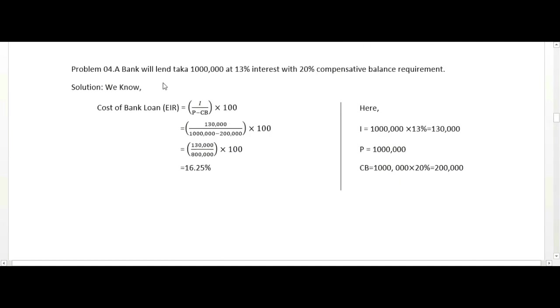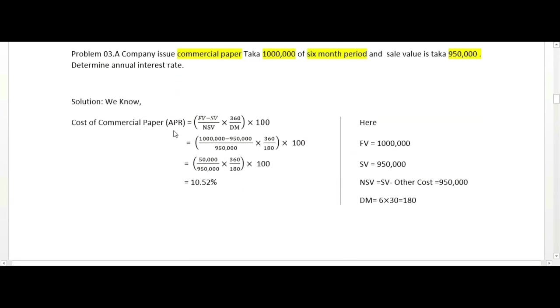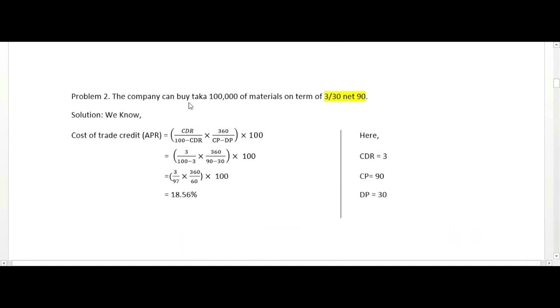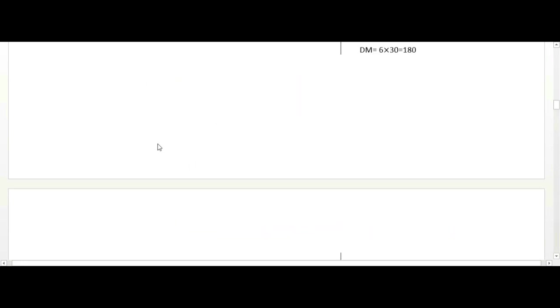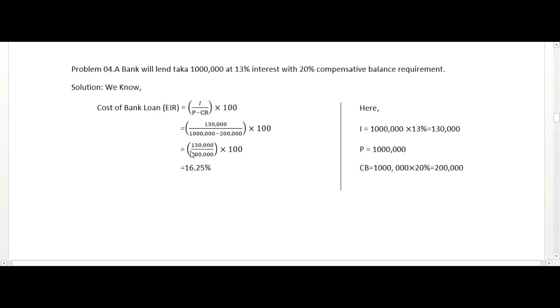Problem: A bank will lend money at 13 percent interest with 20 percent compensating balance. What is the cost of bank loan EIR? The effective interest rate formula is interest divided by P minus CB times 100.